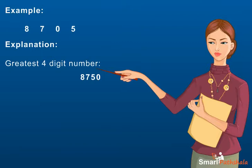To make the smallest 4-digit number, we arrange the digits in ascending order. Thus, the number will be 0, 5, 7, 8.